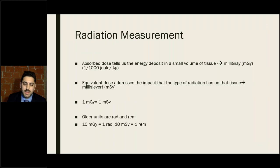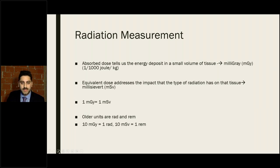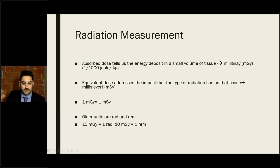Regarding units: milligrays — or one-thousandth of a joule deposited per kilogram — measure radiation absorbed by soft tissue. Millisieverts measure the clinical impact of that radiation. One milligray equals one millisievert. Older units, rads and rems, are ten times the value of grays and sieverts and may appear in older guidelines.